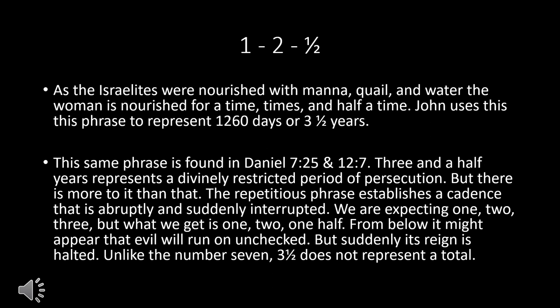We've already seen 1,260 days and 42 months as ways of referencing three and a half years. Here's another way: 'time, times, and half a time.' As the Israelites were nourished with manna, quail, and water, the woman is nourished for a time, times, and half a time. John uses this phrase to represent 1,260 days, or three and a half years — the same phrase is found twice in the book of Daniel. Three and a half years represents a divinely restricted period of persecution. But there's more to it: the repetitious phrase establishes a cadence that is abruptly interrupted. We are expecting one, two, three — but what we get is one, two, one half. From below, it might appear that evil will run on unchecked, but suddenly its reign is halted. Unlike the number seven, three and a half does not represent a total.